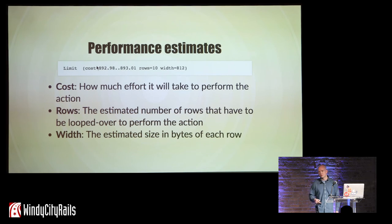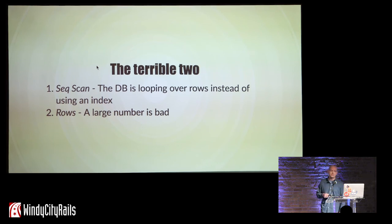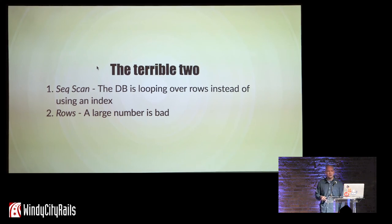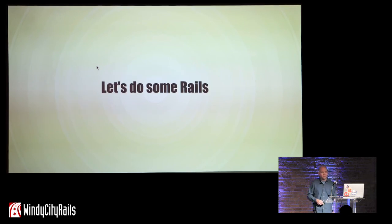We have lots of different node types and performance estimate numbers. The good news is you only really need to keep two things in mind: look for sequential scans, which indicate that the database is looping over lots of rows, and look at rows — if it's looping over a lot of rows, all the rows in your database, that's usually a bad thing.